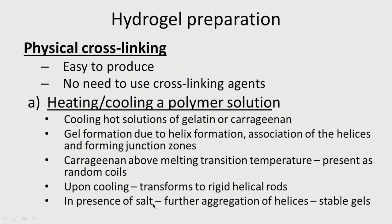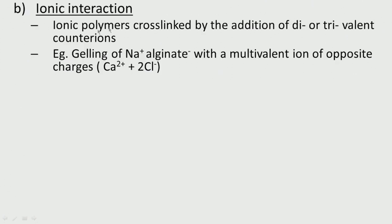When salts are present, chains aggregate and form very stable gels because the cations and anions form strong ionic bonds. Ionic polymers can be crosslinked by the addition of divalent or trivalent counter ions, for example calcium²⁺. With sodium alginate, adding calcium — which has a 2+ charge — allows it to connect two different alginate chains, forming a gel.